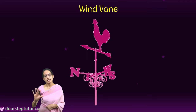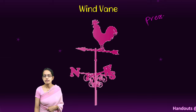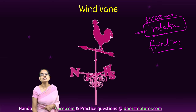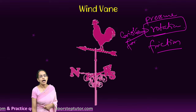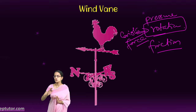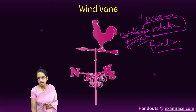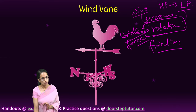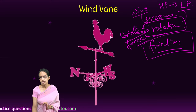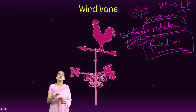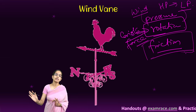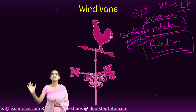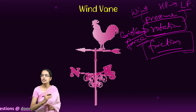Wind is air in motion, determined by three things: pressure, the rotation of the Earth, and friction or obstacles. Due to the Coriolis force, deflection occurs toward the right in the Northern Hemisphere and toward the left in the Southern Hemisphere. Winds always blow from high pressure to low pressure. In terms of friction, velocity is high in open areas like deserts or oceans where there is no obstruction, compared to densely populated urban areas where wind flow is obstructed by buildings.